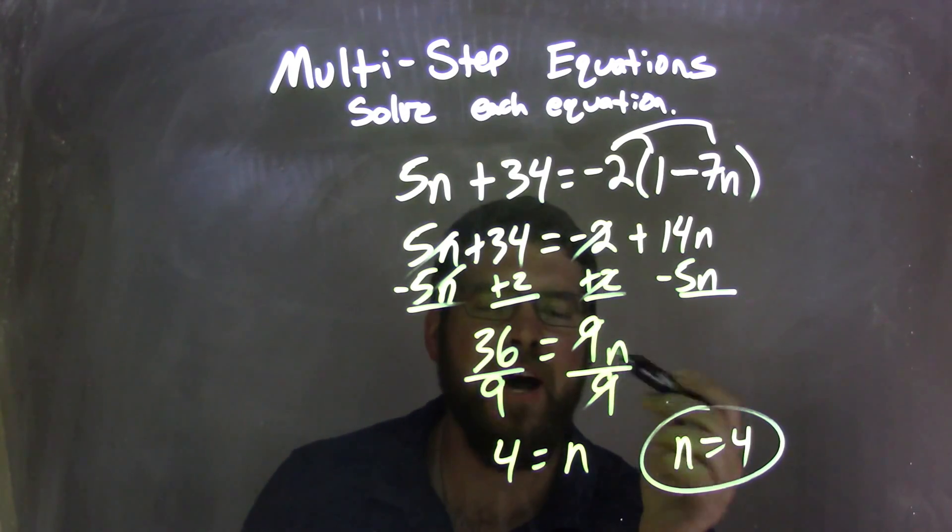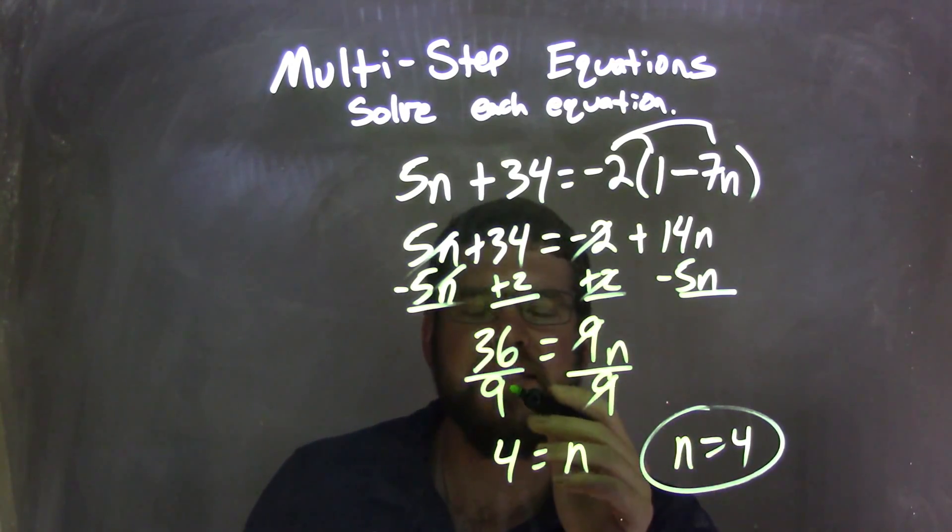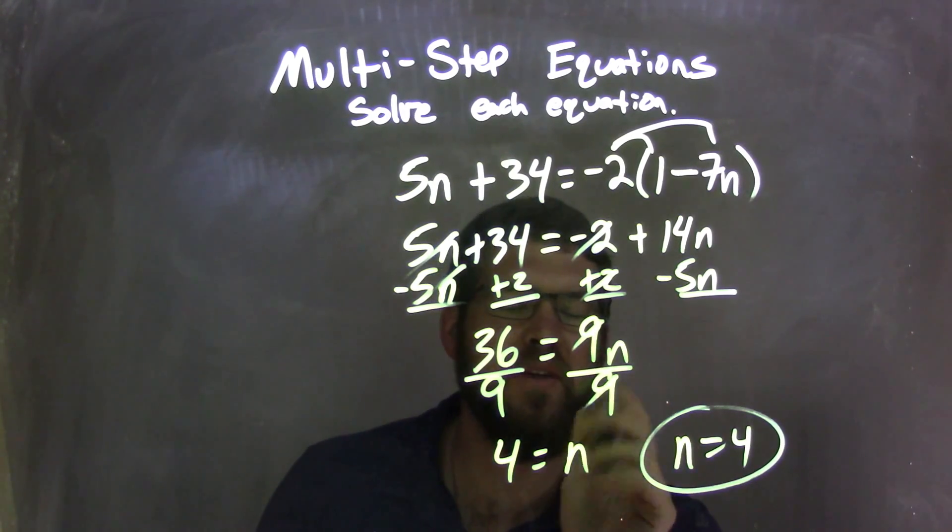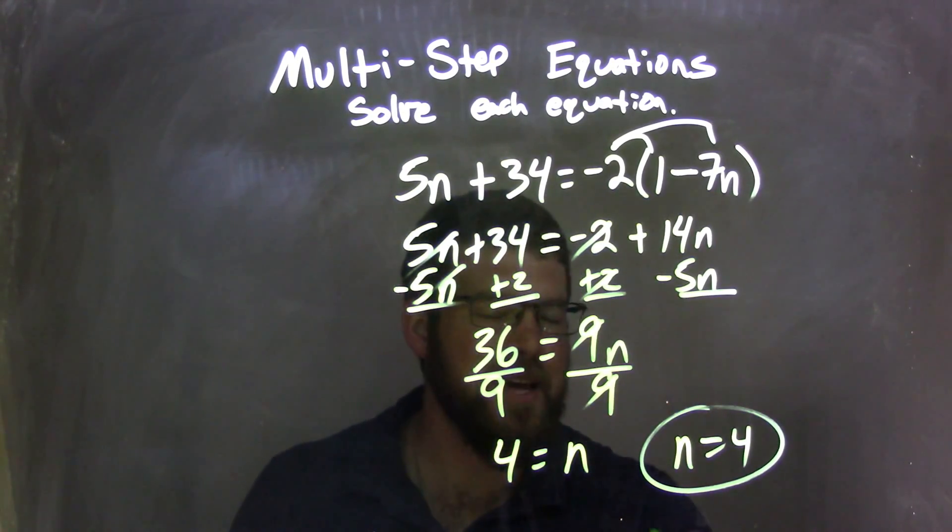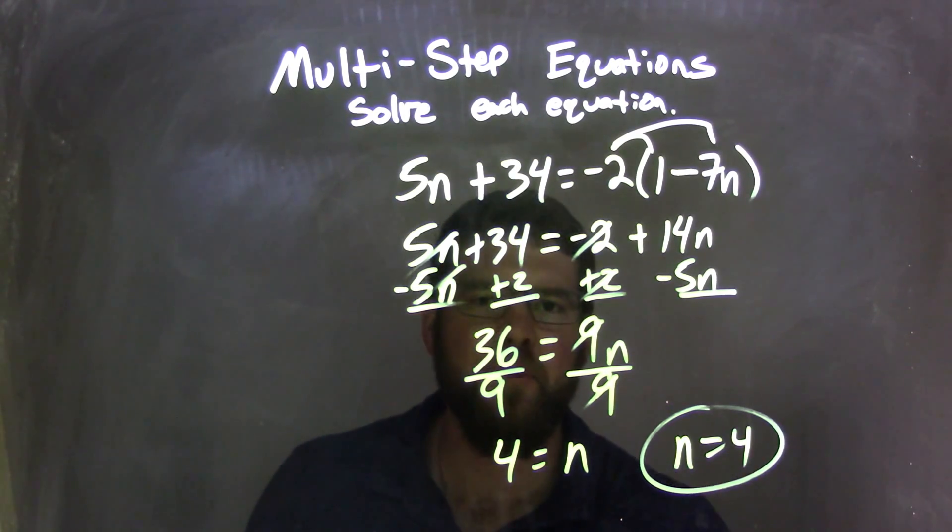Then, I had to divide by 9 to both sides, leaving me with n by itself here, and 36 divided by 9 is 4, and so 4 equals n. I rewrote it to make it nice and neat, n coming first, and so my final answer being n equals 4.